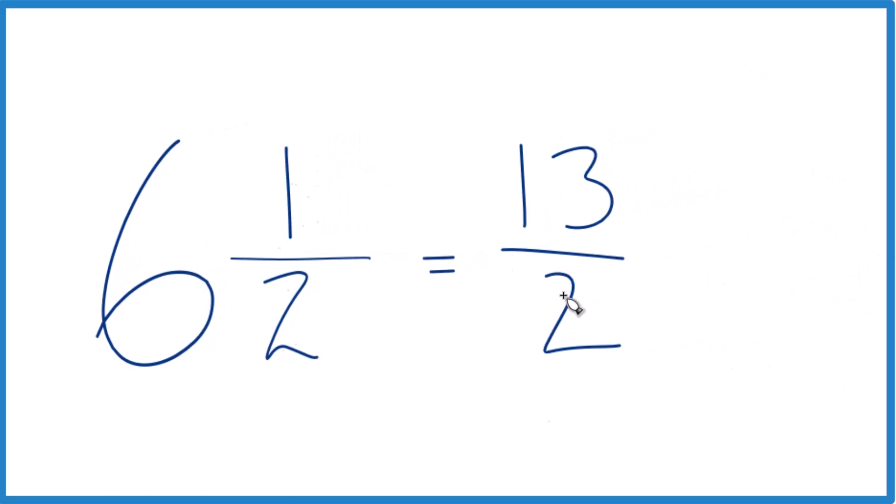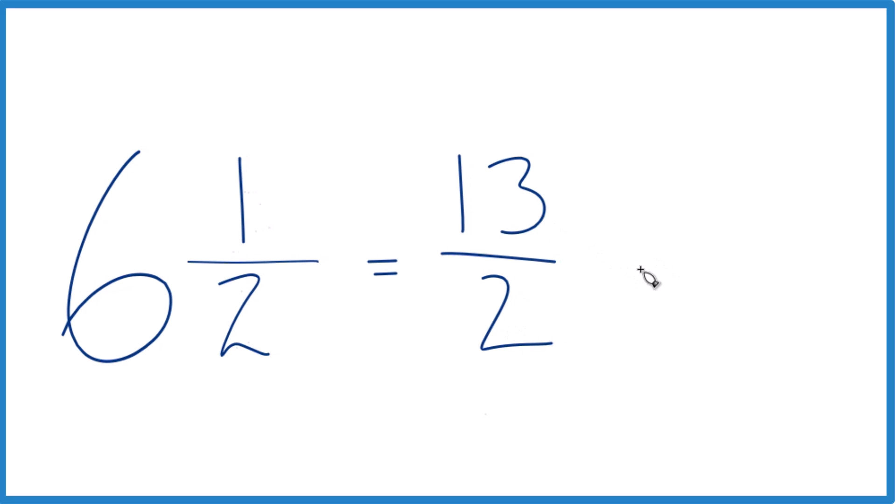You can even check your work because 2 goes into 13 six times. 6 times 2 is 12, and we'd have 1 left over. Bring the 2 across, we get 6 and 1 half. That's what we started with, so we know we did it correctly.